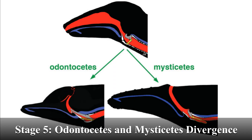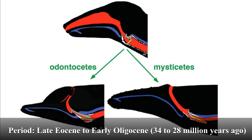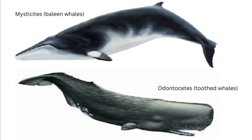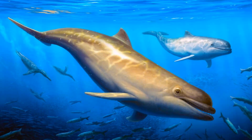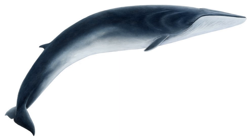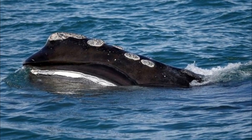Stage 5: Odontocetes and Mysticetes Divergence. Period: Late Eocene to Early Oligocene, 34 to 28 million years ago. At this stage, the whale lineage split into two major groups: the Odontocetes and the Mysticetes. Odontocetes are toothed whales, including dolphins and sperm whales, while Mysticetes are baleen whales, such as humpback and blue whales. The split was marked by differences in tooth structure and feeding strategies.